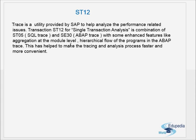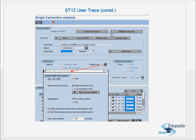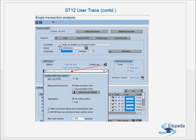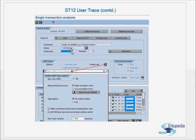Using ST12, the way in which we do a trace and the analysis is also easy and convenient. To do the trace, execute transaction ST12. This is the initial screen of ST12. In the command field, enter an identifier for the trace — for which user or for which program you are doing it. Then specify the server where the process will be running.